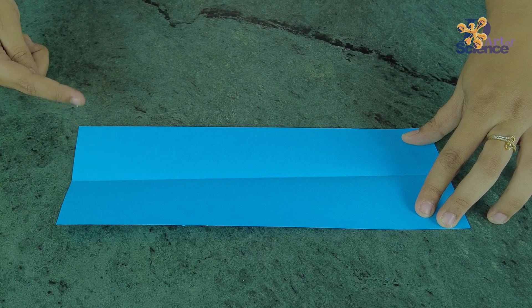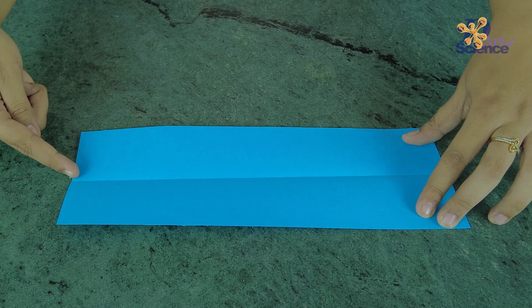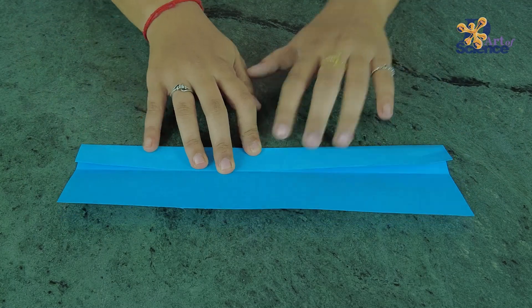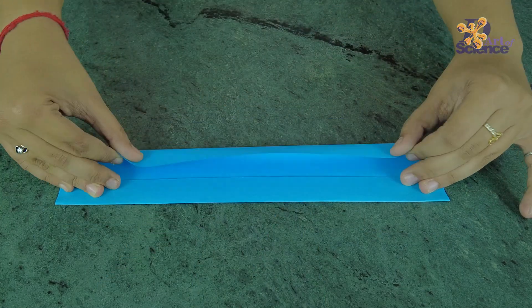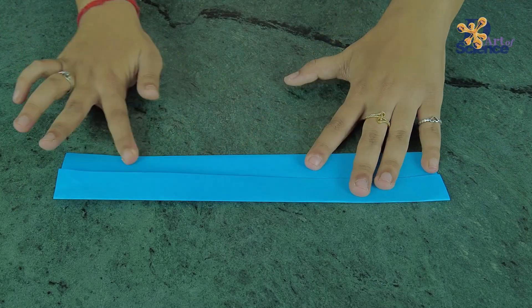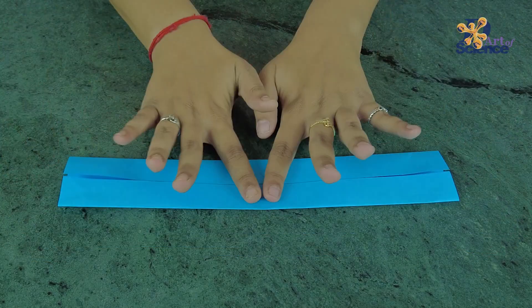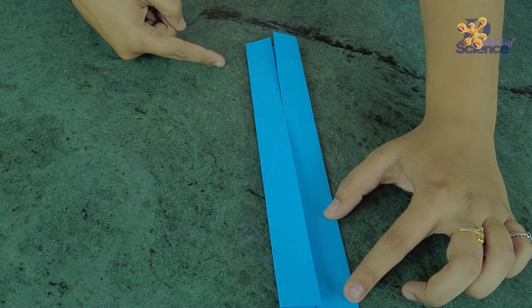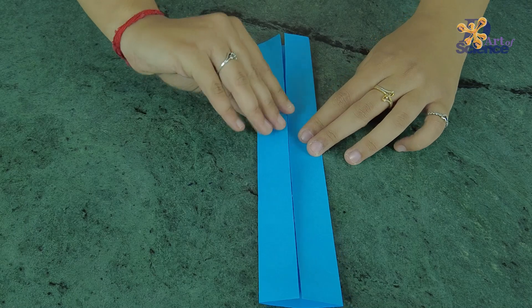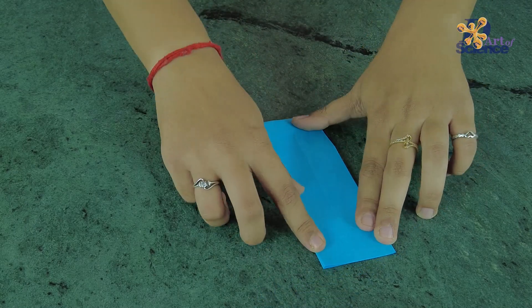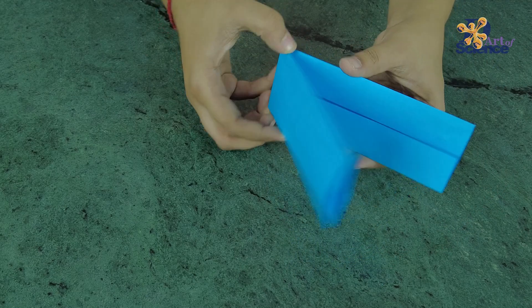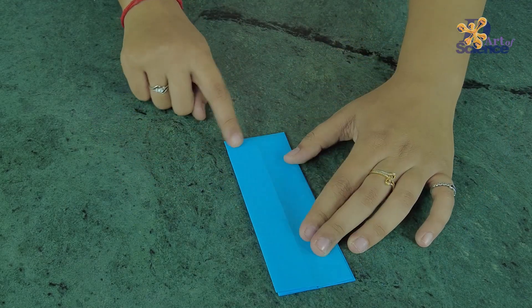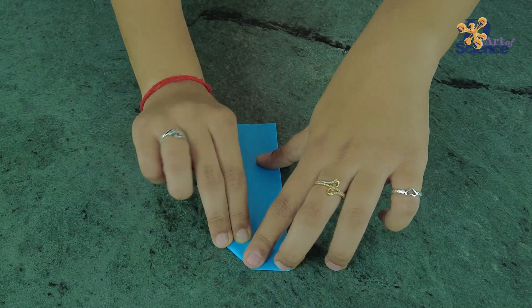Fold both sides of the paper towards the middle line as shown. Next, fold the edges of the top corner into triangles as shown.